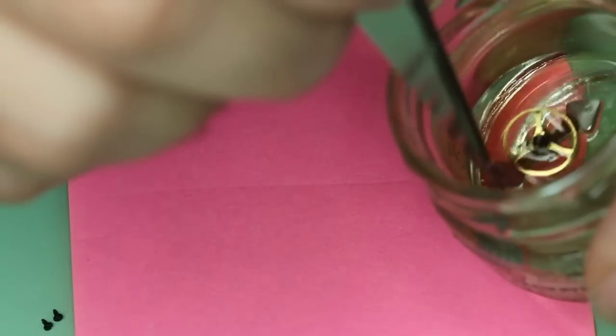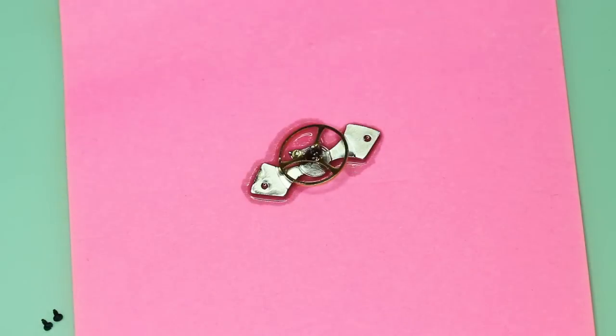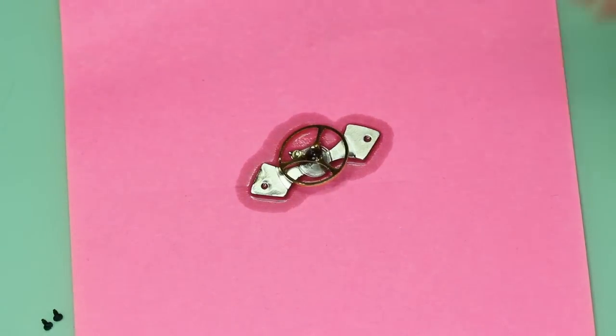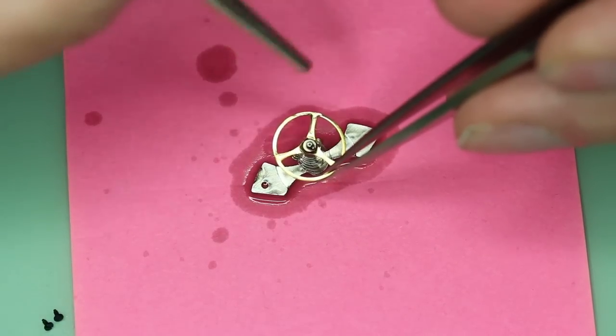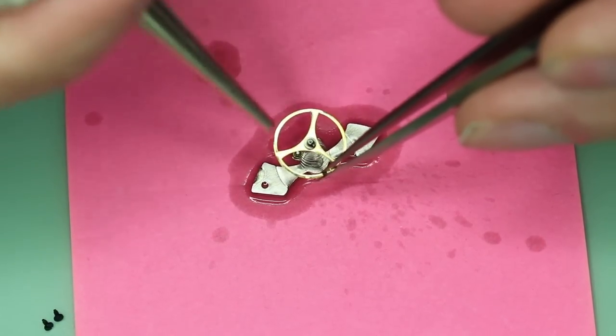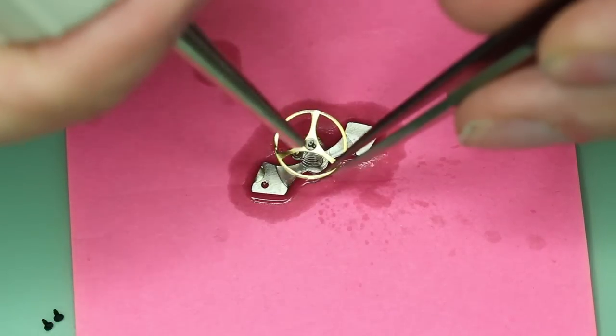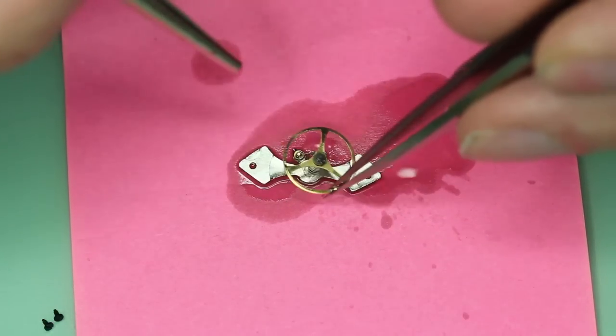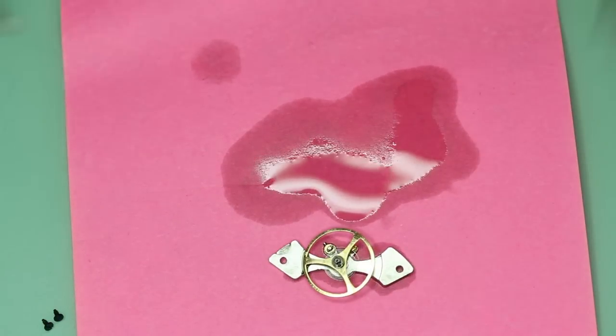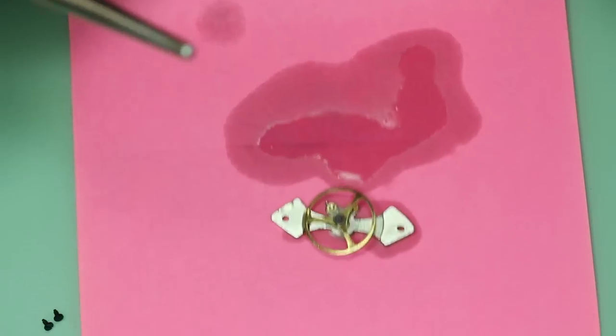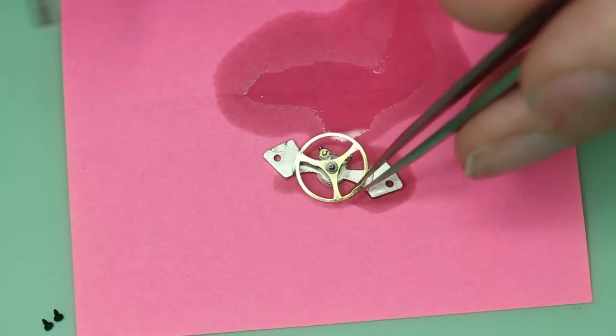Now get a scrap piece of paper and take the balance out. Place it on the paper. The paper will soak up the excess Horolode, or lighter fluid or whatever you are using to clean. Use a blower to start drying the hairspring and the balance.